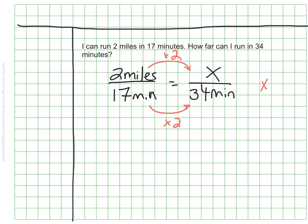It tells me that x is equal to 4 miles. So I can go about 4 miles in 34 minutes if I maintain my same pace.